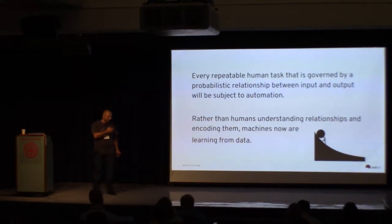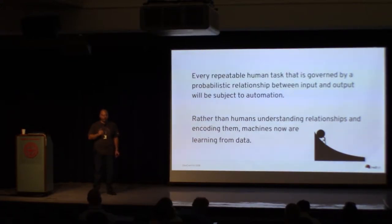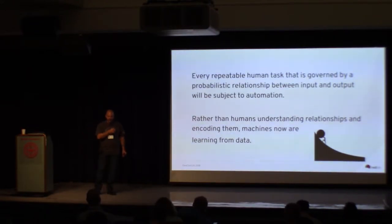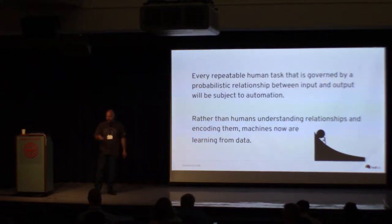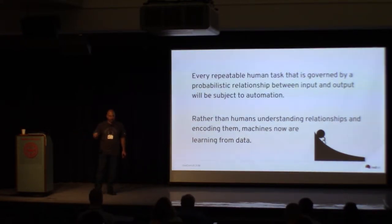The key is that every human task will be automated if you can describe input to output in a probabilistic way. Specifically in the software industry, that means you're moving from humans understanding data and relationships and then encoding their conclusions in code, to machine learning models learning from the data and autonomously coming to conclusions. There are still humans involved in defining the models or getting the data, at least in the initial data engineering.